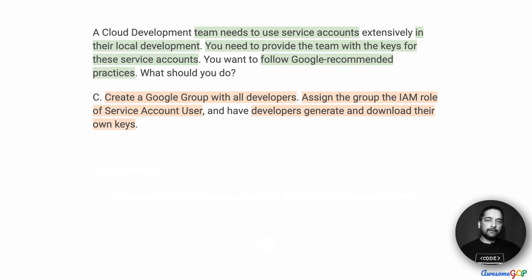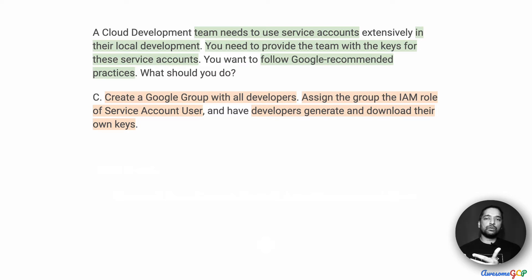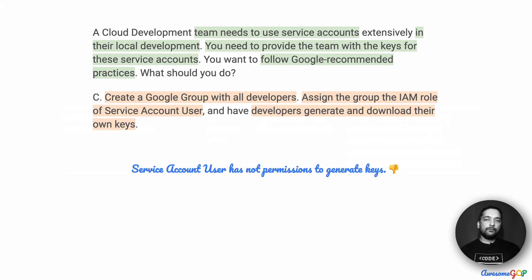Option C suggests that we create a Google group with all developers, then assign the group the IAM role of Service Account User and have developers generate and download their own keys. Just by looking at the name Service Account User, it should give you a clue. Typically when the name ends in 'User', it means somebody who is using a resource but without the ability to create or delete it. The Service Account User role does not have a way to create service accounts or keys. Therefore, we can immediately eliminate option C.